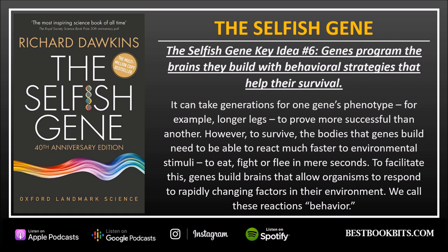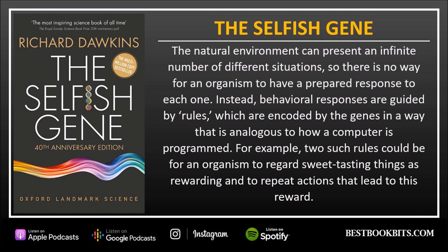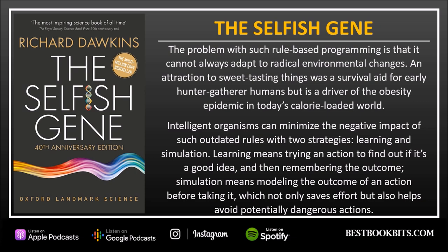The Selfish Gene, key idea number six: genes program the brains they build with behavioral strategies that help their survival. It can take generations for one gene's phenotype — for example, longer legs — to prove more successful than another. However, to survive, the bodies that genes build need to be able to react much faster to environmental stimuli, to eat, fight, or flee in mere seconds. To facilitate this, genes build brains that allow organisms to respond to rapidly changing factors in their environment. We call these reactions behavior. The natural environment can present an infinite number of different situations; there is no way for an organism to have a prepared response to each one. Instead, behavioral responses are guided by rules encoded by the genes, in a way that is analogous to how a computer is programmed.